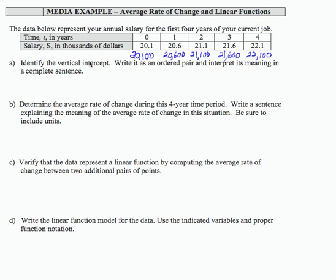In part A, I'm asked to identify the vertical intercept. Well that is the specific ordered pair where the input quantity is zero. So I'm going to look at my table and see that when the input is zero, the output is 20,100.